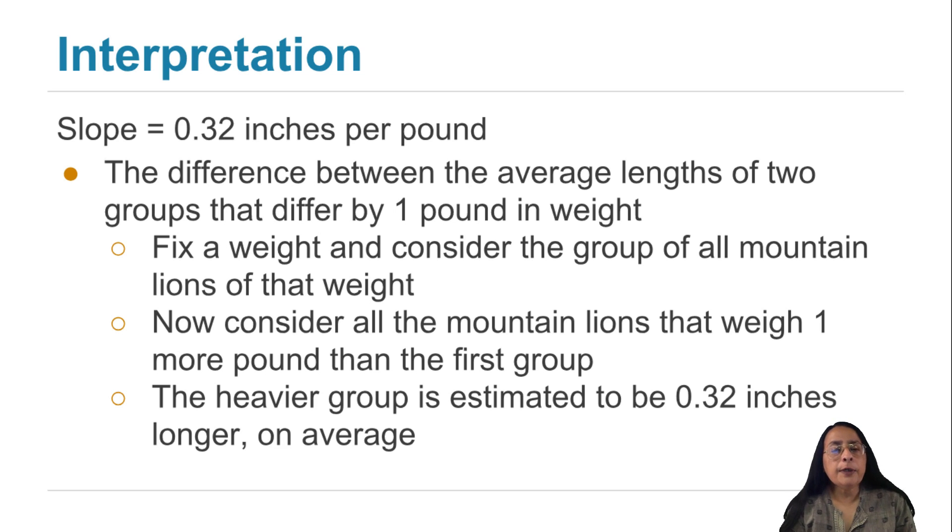The heavier group of lions is estimated to be 0.32 inches longer on average. That's all it is saying. We are not watching a single mountain lion get heavier. The data are a snapshot of mountain lions at one moment, and the slope is a comparison of the averages of two groups that are separated by one pound in weight.